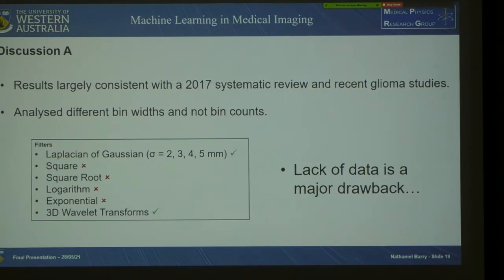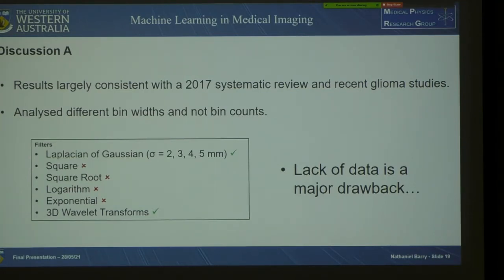These results are largely consistent with a 2017 systematic review of repeatability and reproducibility studies and recent glioma studies thereafter. Regarding image discretization, bin widths have been shown in the literature to have better reproducibility than bin counts and also normalize the intensity resolution across images with different SUV ranges, making them more appropriate when imaging at multiple time points.